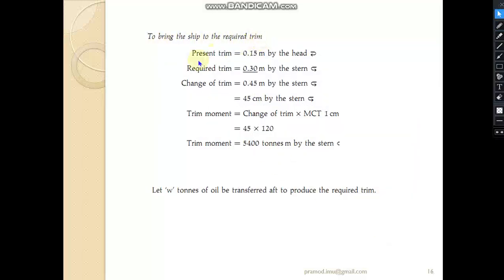Now to bring the ship to the required trim, we know the present trim is 0.15 meters by head and the required trim is 0.3 meters by stern. The change of trim will be from 0.15 by head to 0.3 by stern, so we need to add these values. Change of trim will be 0.45 meters by stern—that will be 45 centimeters by stern. The trimming moment will be the change of trim into MCT value, so 45 into 120, giving us 5400 tons-meter. This moment is to be generated by stern.